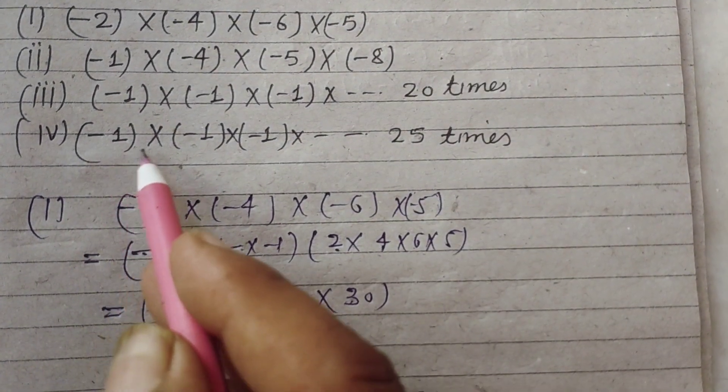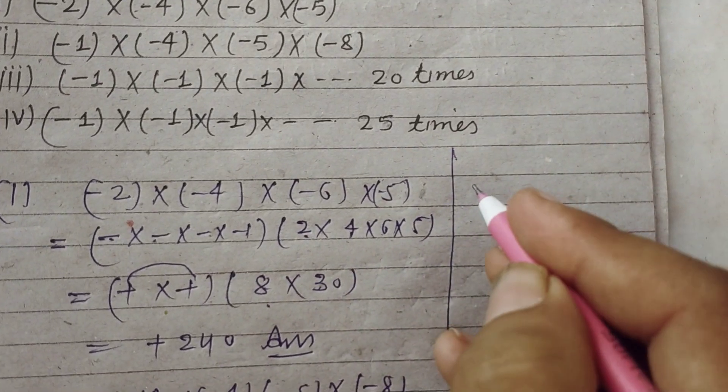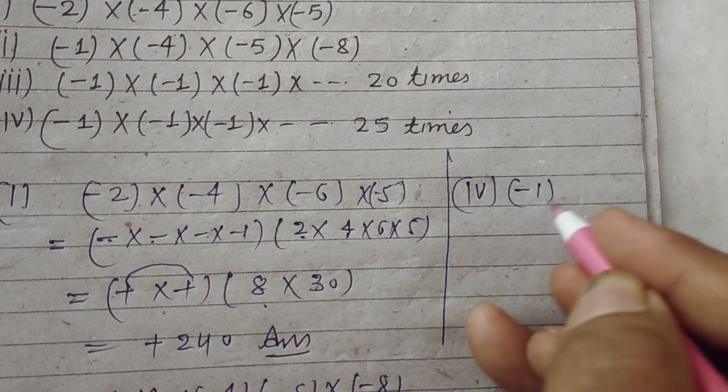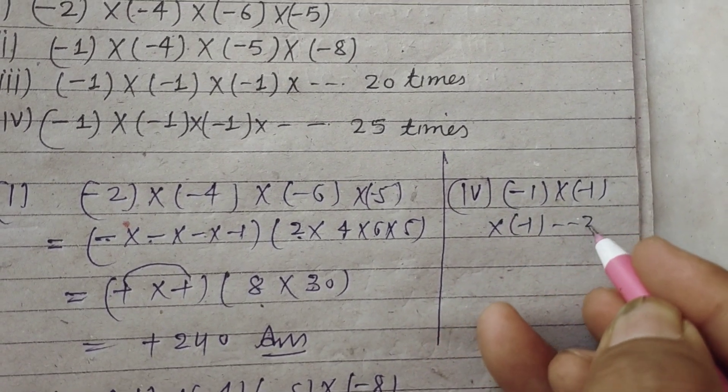The fourth part is (-1) × (-1) × (-1)... 25 times. When we multiply (-1) × (-1) × (-1) 25 times, which is odd,